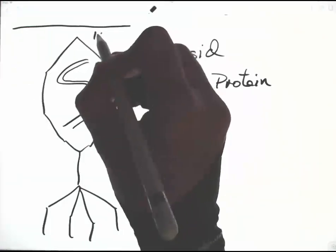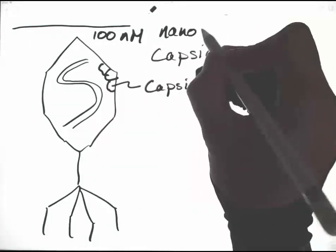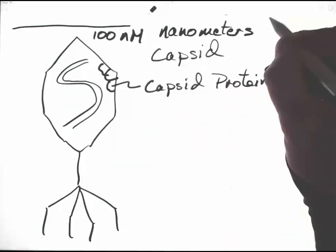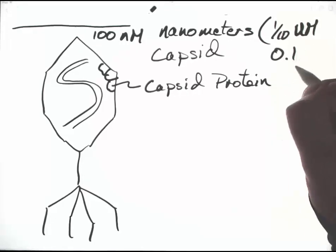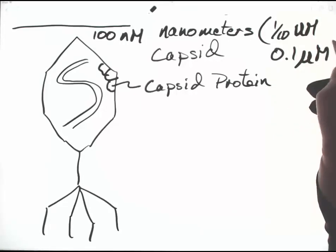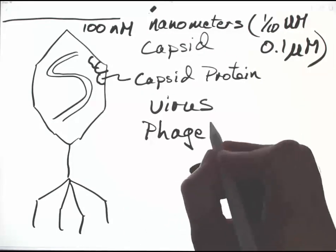Our scale bar here is about 100 nanometers, one-tenth of a micron, or 0.1 micron. As a virus that attacks bacteria, it's also called phage.